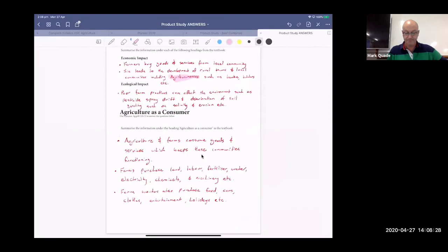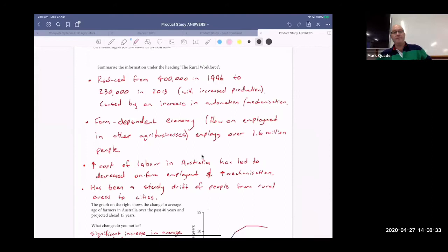The rural workforce reduced from 400,000 in 1996 to 230,000 in 2013. Through this time, we have increased our production also. This is caused by an increase in automation. Basically, we are able to do more with machines rather than just relying on manual labour. Farm-dependent economy, the flow on employment in other agribusinesses employs over 1.6 million people. Increased cost of labour in Australia has led to a decrease of on-farm employment and therefore an increase in mechanisation. Labour is really expensive, so we develop machines to do that work for us. There's been a steady drift of people from rural areas to cities.